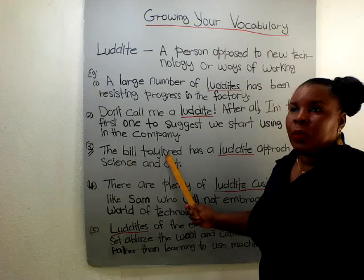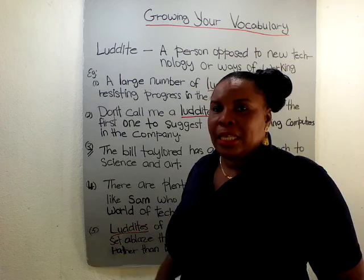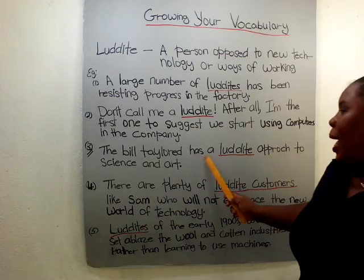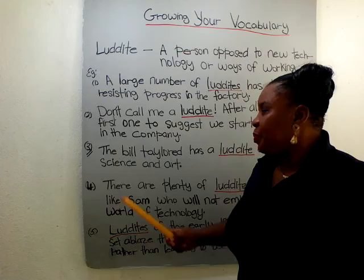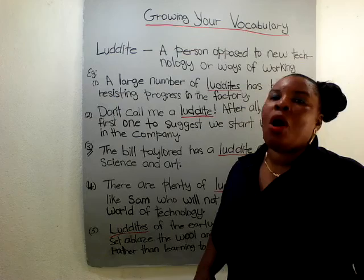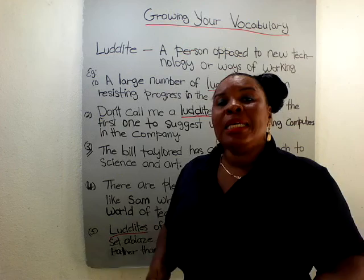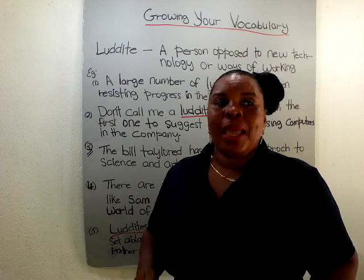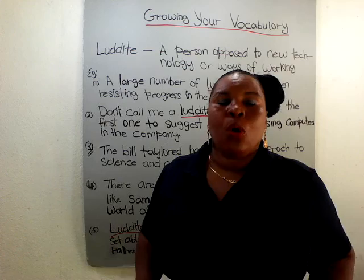Number three: the bill tailored — not a tailor that fits your clothes, but a bill that is written, coming into law by parliament. The bill tailored has a luddite approach to science and art. So these people in parliament who created this bill want these artists and scientists to continue working without having new technology to improve their way of working or to make life easier or make their job better.